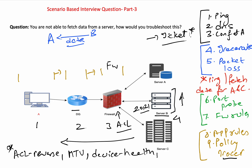That is the process of troubleshooting as a network administrator — vendor support will definitely help you further. If the issue is narrowed down to the server end and everything else looks fine, you can try rebooting the server as a last resort. If still unresolved, reach out to server support. These are the known issues that will help you in an interview. This was the third video on scenario-based interview questions from S&T Networks — please leave any suggestions in the comments. Thank you.